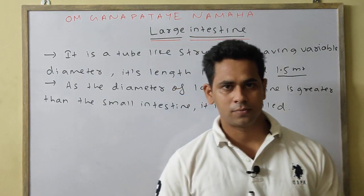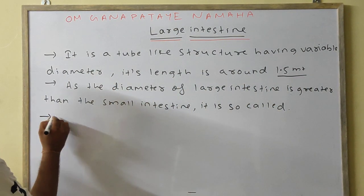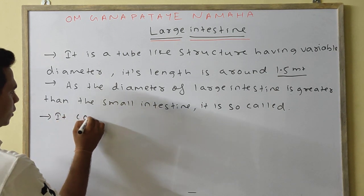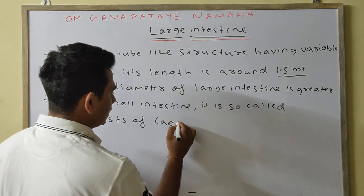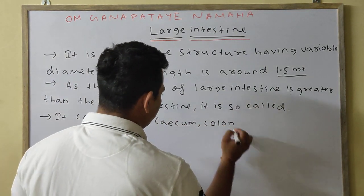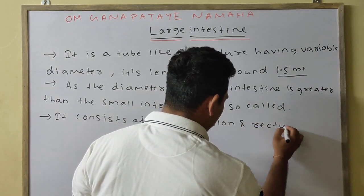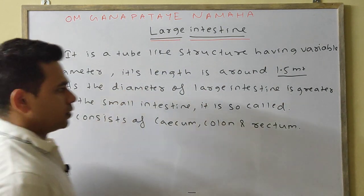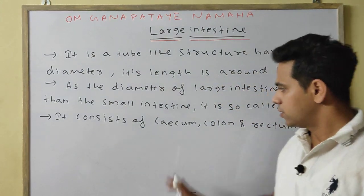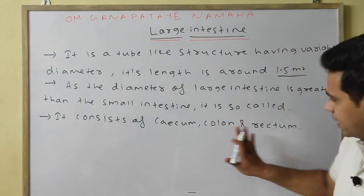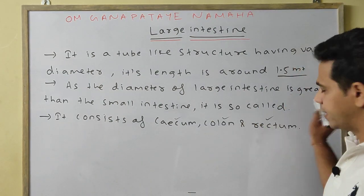The large intestine consists of three main parts: the caecum, colon, and rectum. We will discuss the details of the caecum, colon, and rectum.